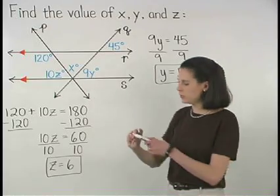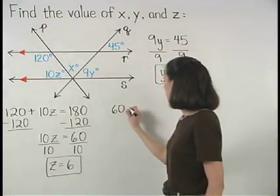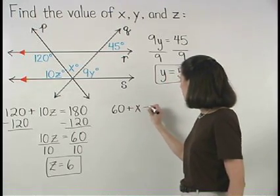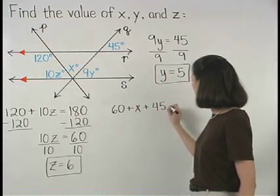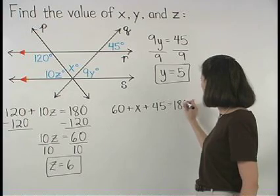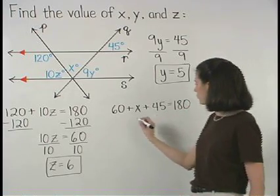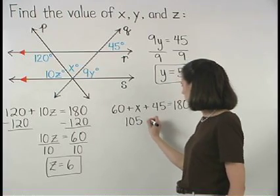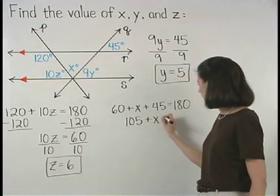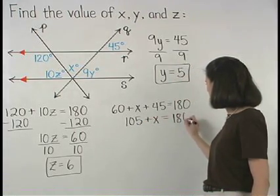So we have 60 plus x plus 45 equals 180. Simplifying on the left gives us 105 plus x equals 180.